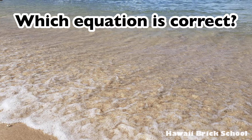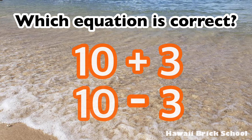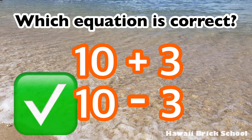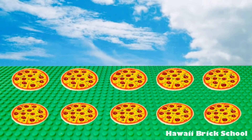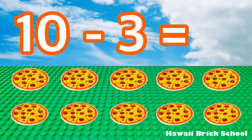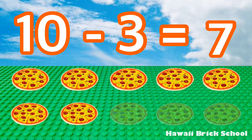Which equation is correct: 10 plus 3, or 10 minus 3? The correct equation is 10 minus 3. 10 minus 3 is 7.